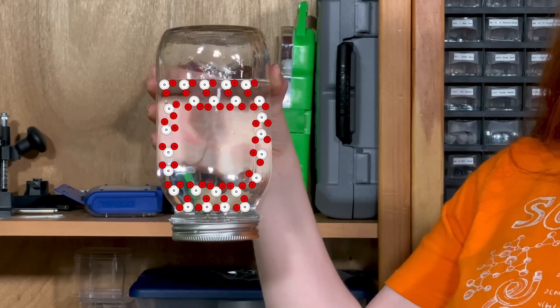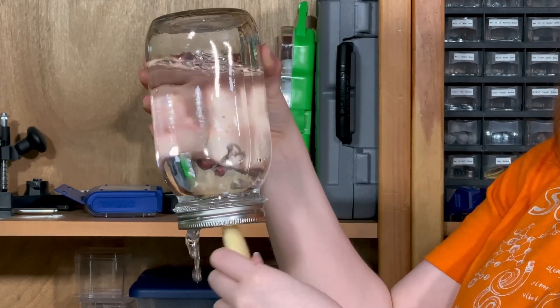As you can see, the water can't even fall through the mesh, but if you add soap, the surface tension goes away.